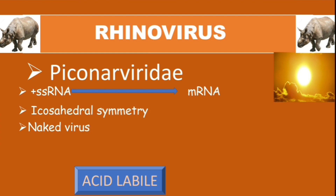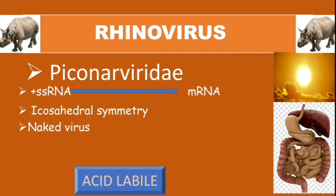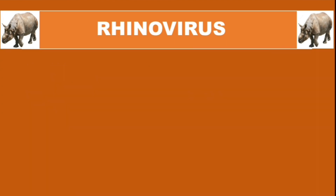This virus is acid labile. In previous videos on enteroviruses, we said enteroviruses are acid stable, meaning they are not affected by gastric juices and can infect the gastrointestinal tract and be transmitted by the fecal-oral route. But rhinoviruses cannot infect the GI tract, meaning they cannot be transmitted through the fecal-oral route.